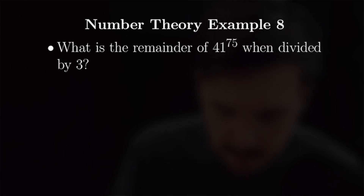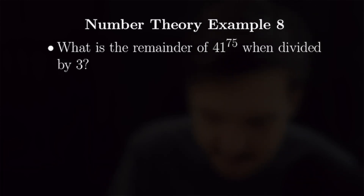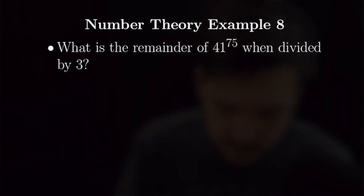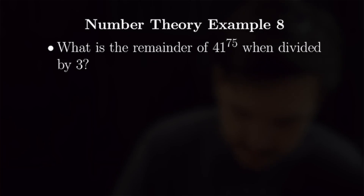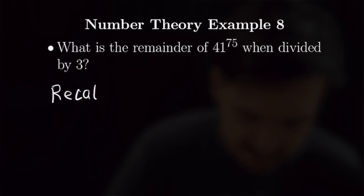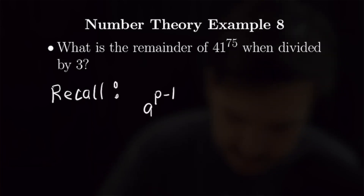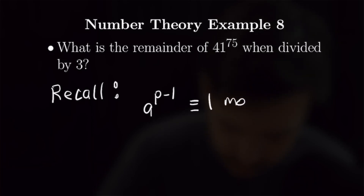For our first question, we are going to want to find the remainder of 41 to the 75th power when divided by 3. To do that, we are going to use Fermat's Little Theorem. For those of you who don't remember, we're going to recall Fermat's Little Theorem, which states that a to the p minus 1 is congruent to 1 mod p.